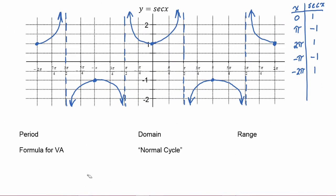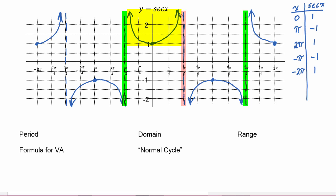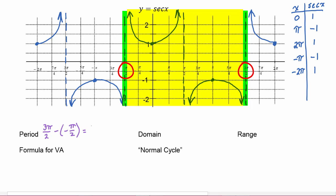Now let's do some analysis of this graph. We see this graph definitely does repeat itself. If we use a cycle from one asymptote all the way to an asymptote, we need a chunk of the graph doing the positive y values and a chunk doing the negative y values. So if we start at negative pi over two and go all the way to three pi over two, we can subtract to find the period: three pi over two minus negative pi over two is equal to four pi over two, which is two pi. So the period of secant is two pi.